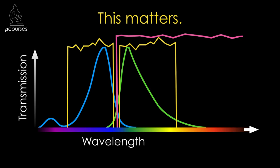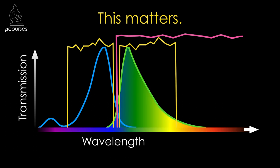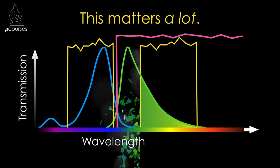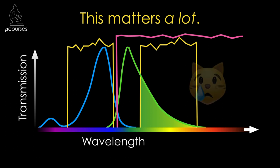Carefully choosing a filter set is so important. If you use the correct filter set for your fluorophore, you'll look into the microscope and see green. But if your filter set has a different emission filter, you'll still see green — assuming your sample is bright enough — but you won't know that you've blocked out the vast majority of photons emitted from your sample. And if your sample is on the dim side, you might see nothing at all.